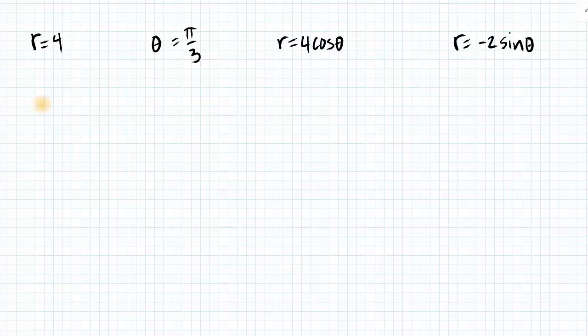So the graph here is the set of all r, thetas where r is always 4 and theta can be any angle. The result of that is a circle centered at the origin of radius 4, and the equation for that in Cartesian would be x squared plus y squared equals 16.